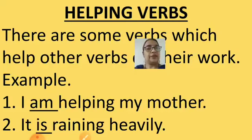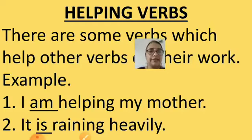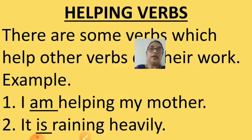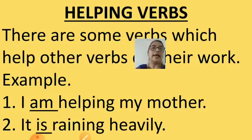You will understand with more examples. Second sentence: It is raining heavily. The subject is 'it'; the action word — the verb — is 'raining'. Which word is helping the main verb? That is 'is'. So in the first sentence 'am' is the helping verb, and in the second sentence 'is' is the helping verb.